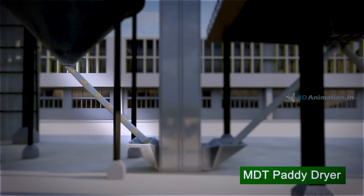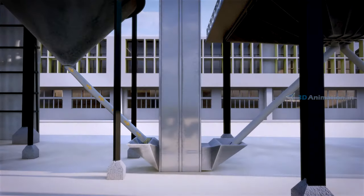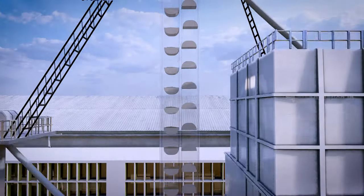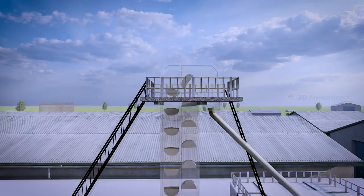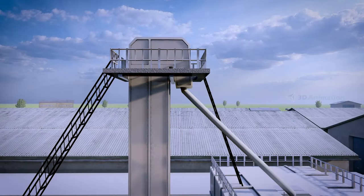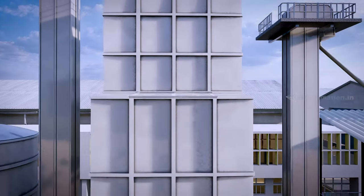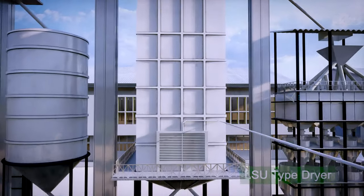Then it moves to NDT paddy dryer to remove the moisture from paddy. The drying section allows uniform distribution of paddy for uniform drying and quality.